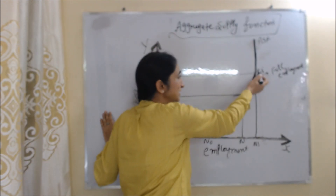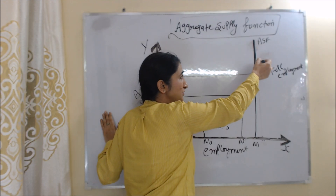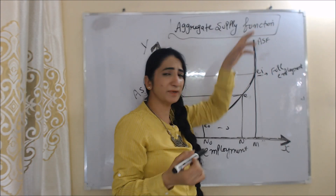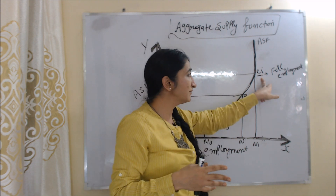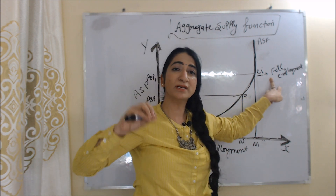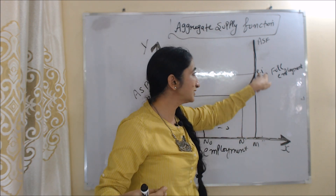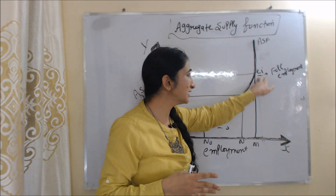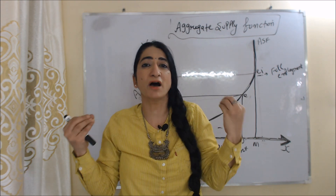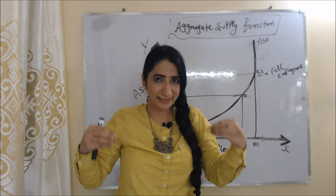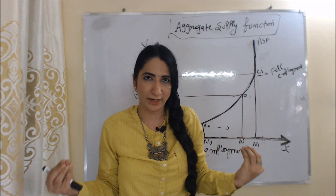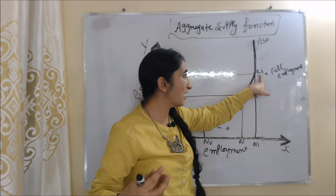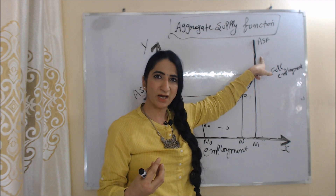You can see that after a certain point, our aggregate supply function curve becomes vertical. Why? Because that point is the full employment point. At this point, all laborers are fully employed. After this point, more labor is not available in the economy — those people who want to work at existing wages cannot find work. So that point is the full employment point where all people are fully employed.